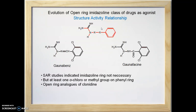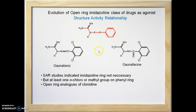Extensive research on alpha 2 agonists has shown that the imidazoline ring was not necessary for alpha 2 agonist activity, but the phenyl ring required at least one ortho chlorine or methyl group. These studies led to the development of guanabenz and guanfacine, which are open ring imidazolines where the guanidino group is separated from the phenyl ring by a two-atom bridge. These are also clinically useful antihypertensive agents with a mechanism similar to clonidine.